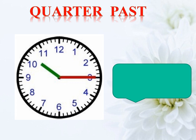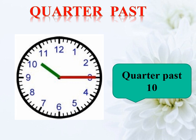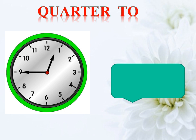Quarter past — whenever the long needle points at 3, it means that it is quarter past. The big hand — the minute hand — moves from 12 to 3. It is quarter past the hour because the big hand has moved a quarter of the way around the clock face. Here the time is quarter past 10, because the short hand points at 10.